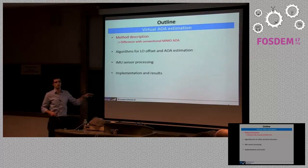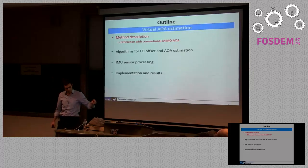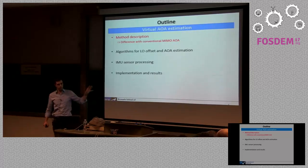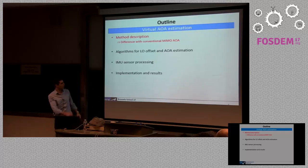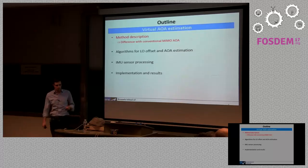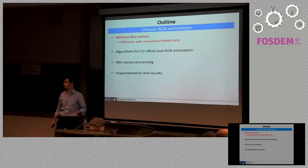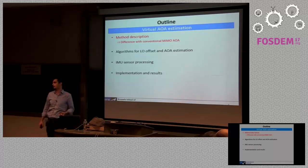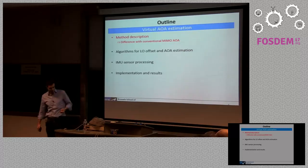The outline is as follows. First, I'll show the different challenges and how this differs from conventional MIMO estimation. Then I'll show how we can solve these problems — in particular, how we can solve frequency offset problems and how we can determine the location of our receiver through IMU processing. Finally, we'll show some implementation and results.